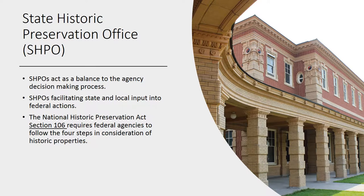The National Historic Preservation Act's Section 106 requires federal agencies to follow the four steps in consideration of historic properties. People therefore often call the process Section 106.